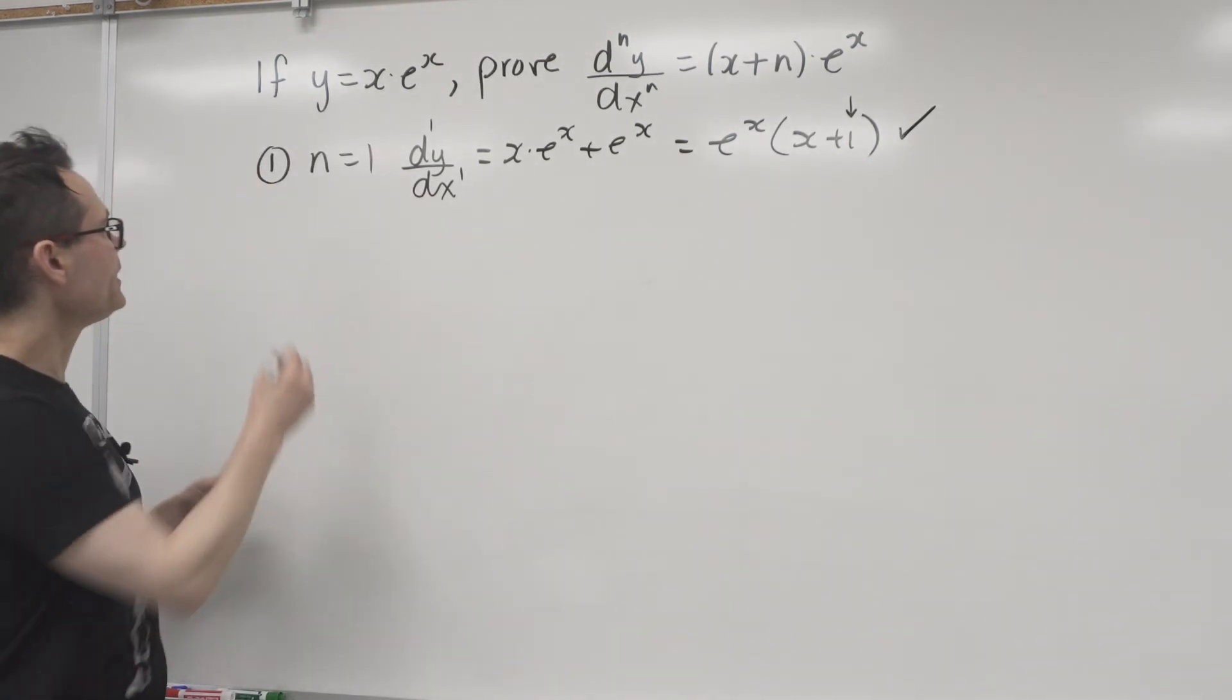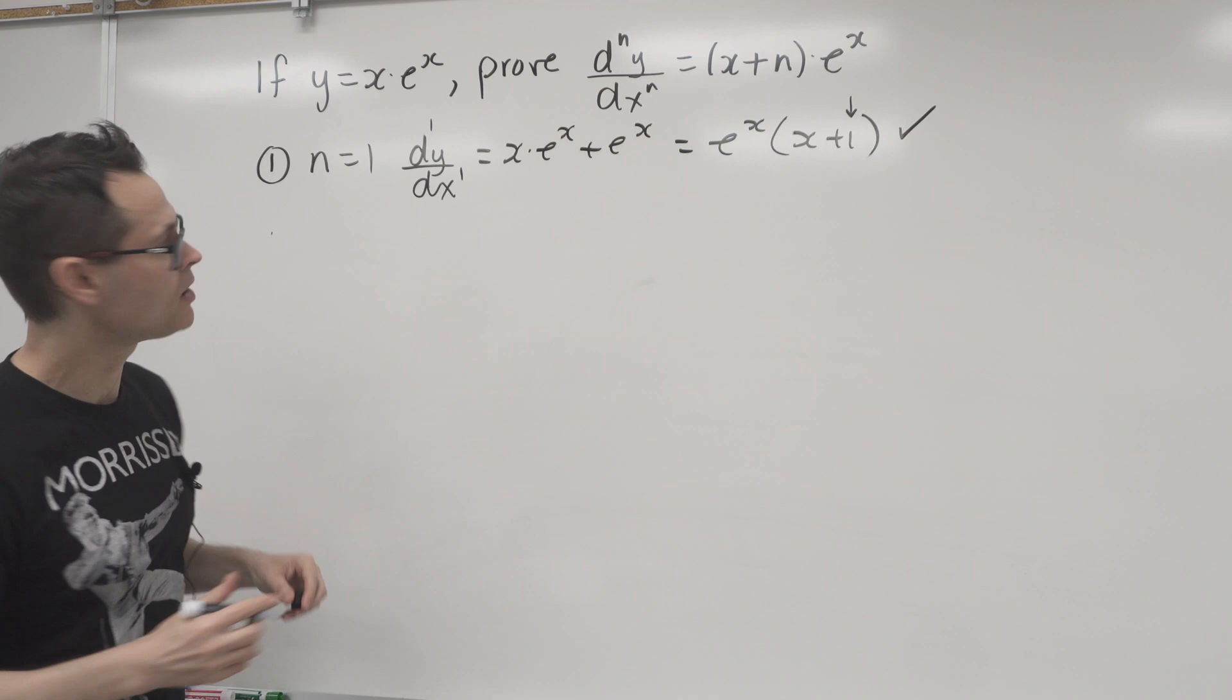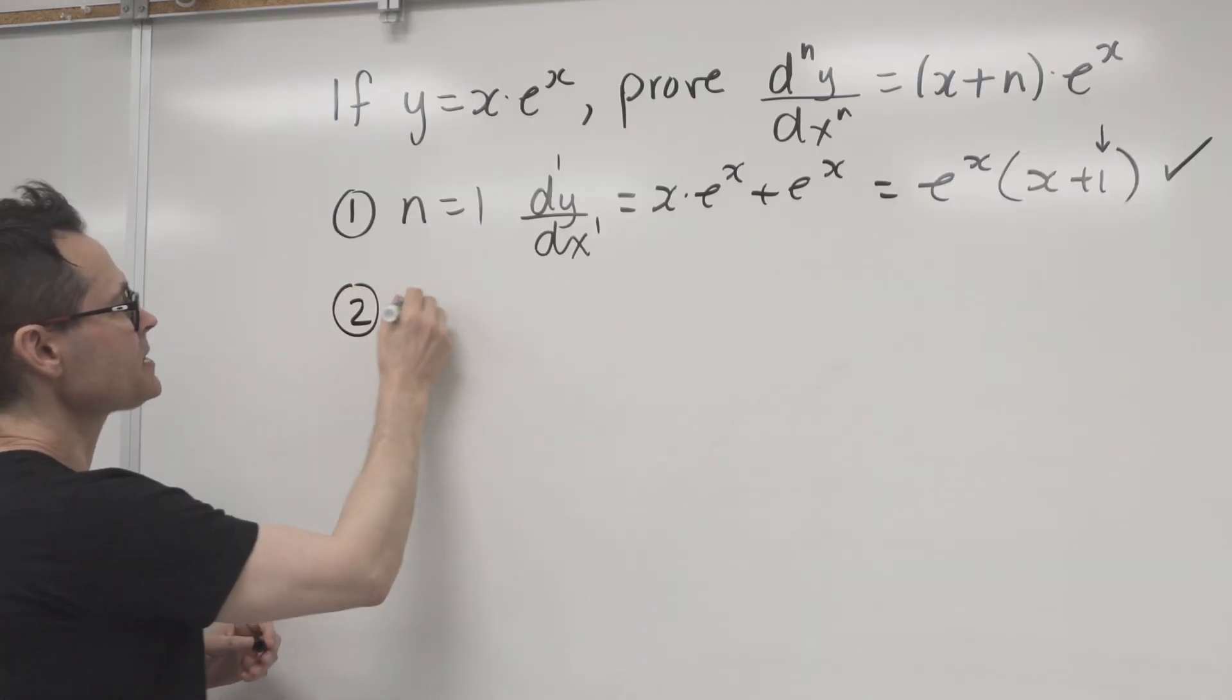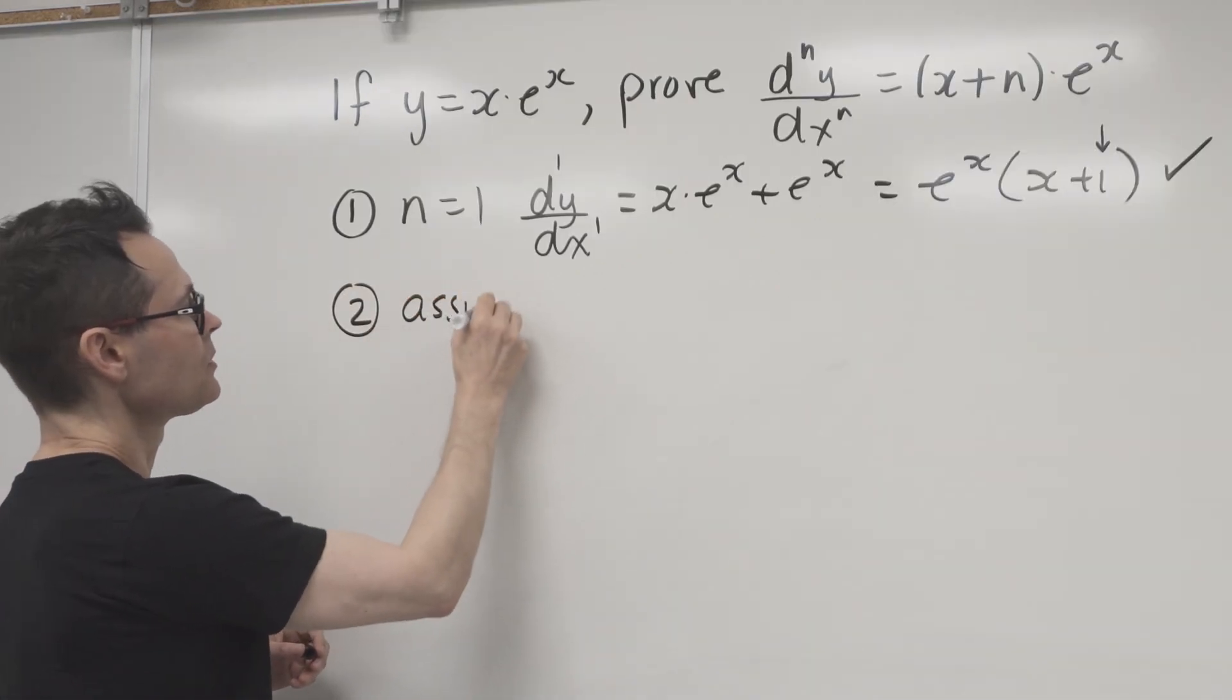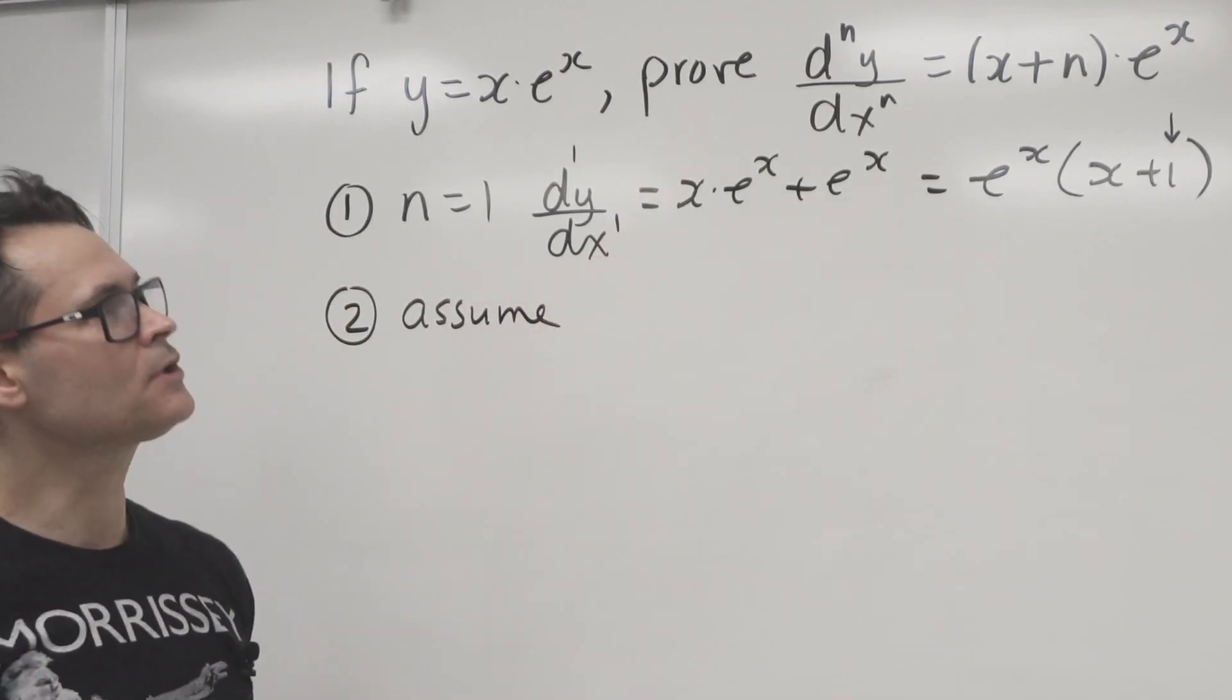All right, so we keep going. So of course, if that was wrong, we could stop, right? We could use this as a contradiction. Second step is the assumption. So we assume, we make assumptions. So we assume that it's true for k, okay? The k-th derivative.